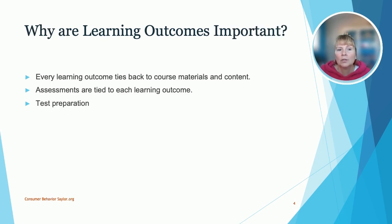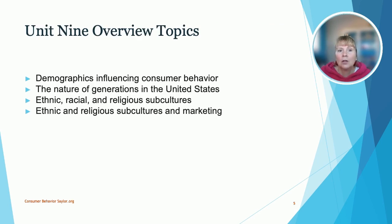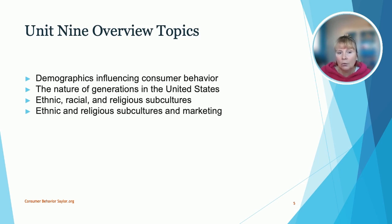Why are learning outcomes so important? Every learning outcome ties back to your course materials, your assessments, and your test preparation. Here are the Unit 9 overview topics: demographics that influence consumer behavior, the nature of generations in the U.S., ethnic, racial, and religious subcultures, and ethnic and religious subcultures and marketing.